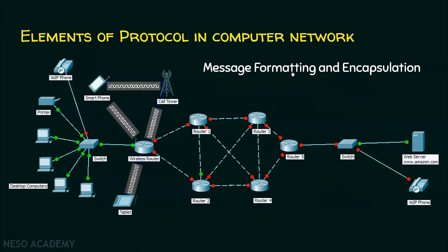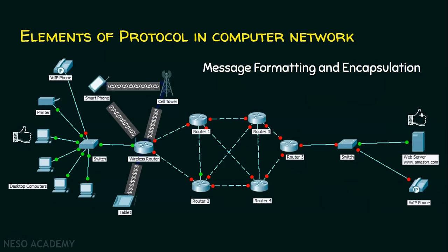Now we will see what is message formatting and encapsulation. Both the sender and the receiver must mutually agree upon a common format so that the communication becomes understandable. At the same time, some encapsulation is also done. With the data it is going to send, it adds a few more pieces of information — the source information and the destination information. To be precise, the IP addresses are added to the data which is going to be sent.